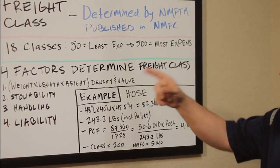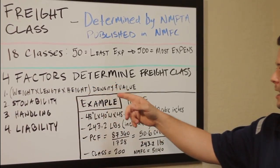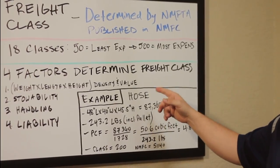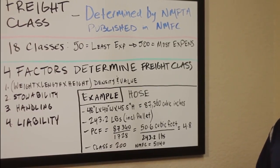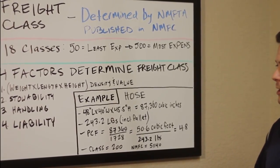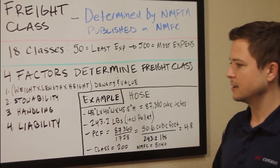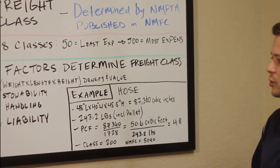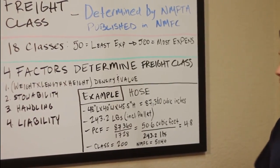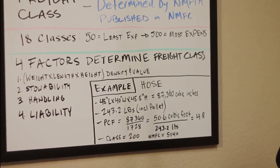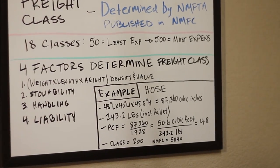There are four factors that determine freight class. The first one is weight, length, and height — or the density and the value. The next is stowability. Stowability is a quantifiable classification that represents the difficulty in loading and carrying these items. The next factor is handling, a classification that represents the ease or difficulty of loading and carrying the freight assigned to the items. The fourth factor is liability — the probability of freight theft, damage, or damage to adjacent freight.